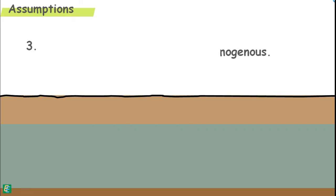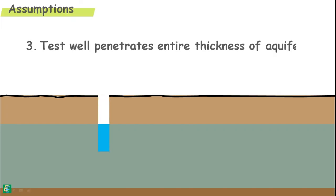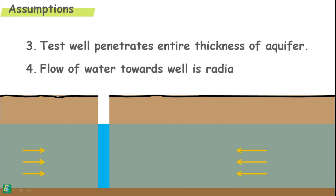Third, we assumed that our test well penetrates the entire thickness of aquifer. And with that, we assumed that the flow of water towards the test well is only radial and horizontal, and water does not enter the well from the bottom.